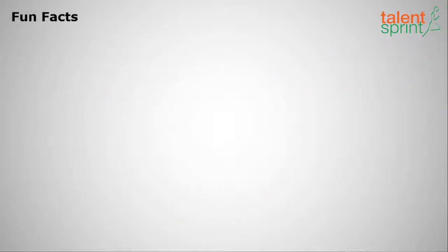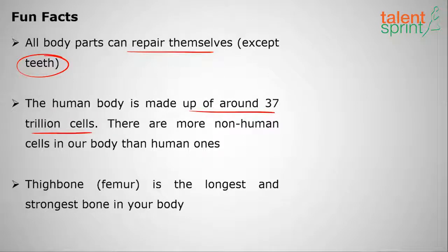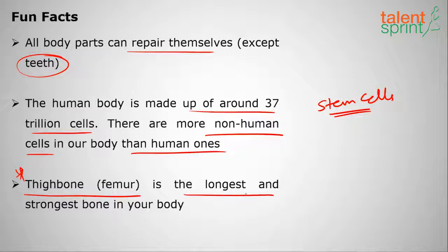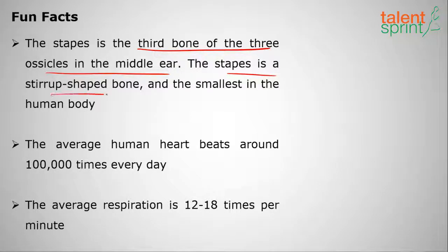All body parts can repair themselves except teeth. The human body is made up of around 37 trillion cells, and there are more non-human cells in our body than human ones. The femur (thigh bone) is the longest and strongest bone in the body, while the stapes — a stirrup-shaped bone in the middle ear — is the smallest bone in the human body.